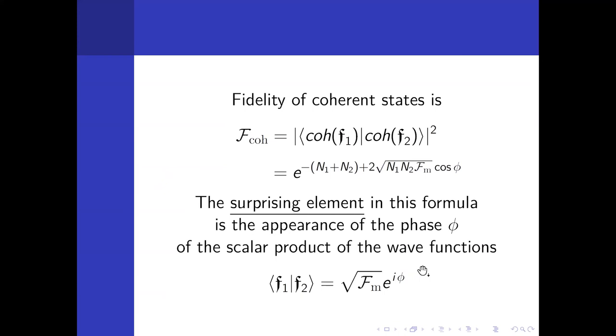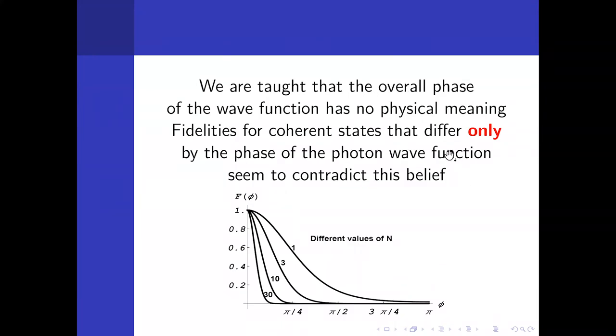This is a surprising element, because as we teach students of quantum mechanics, we always say overall phase has no physical meaning. The overall phase of the wave function of the photon, which here appears as phi, should have no physical meaning. And indeed for single photon, it does not have any measurable effect. However, when we use these different wave functions, even though the photon state is the same, here we see the appearance of the classical phase.